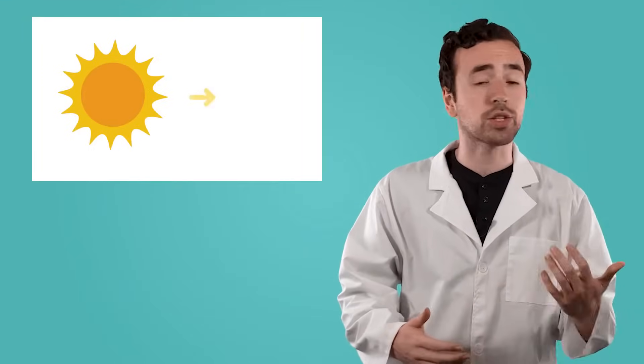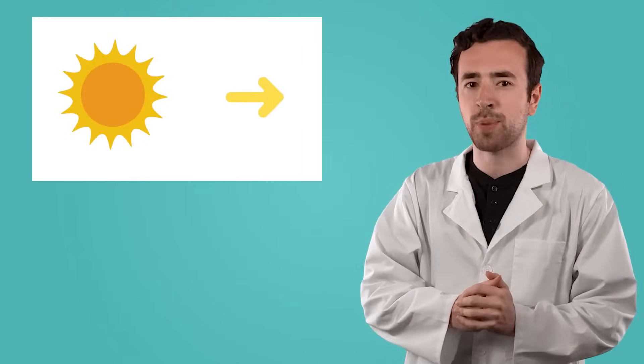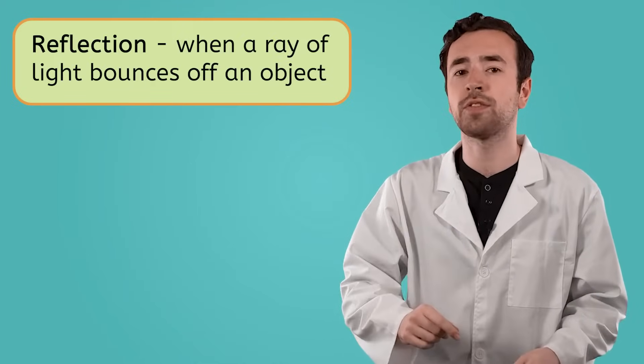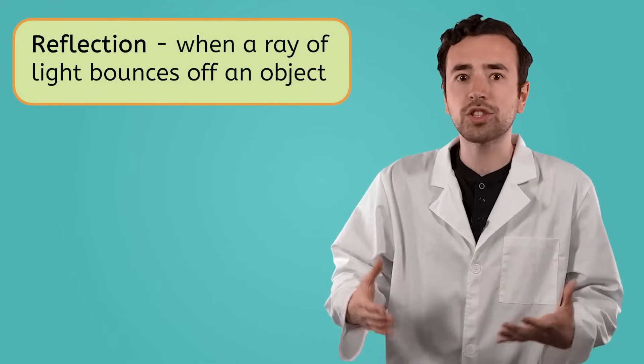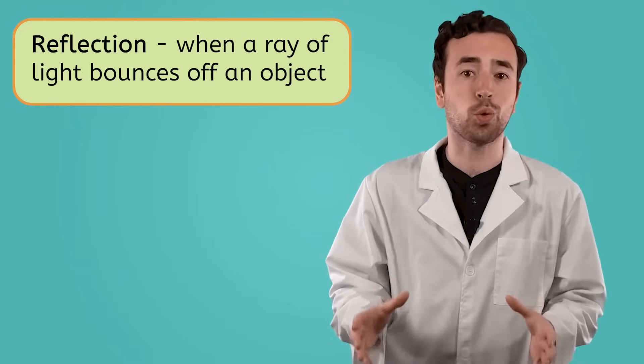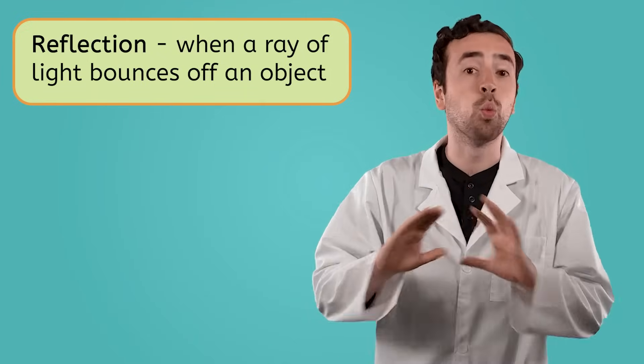What happens once light hits an object is called reflection. When you think of the word reflection, you might think of looking at yourself in a mirror, or a pond, or any shiny surface. Sorry, got distracted for a second there. As I was saying, those are all reflections, but reflection is also so much more than that. Reflection is when a ray of light bounces off an object. The reflection of light is what allows us to see the world around us. Without light, sight wouldn't be possible.